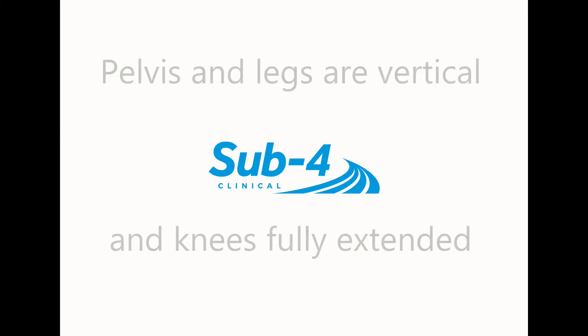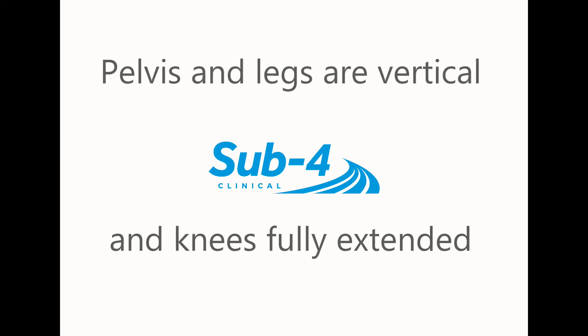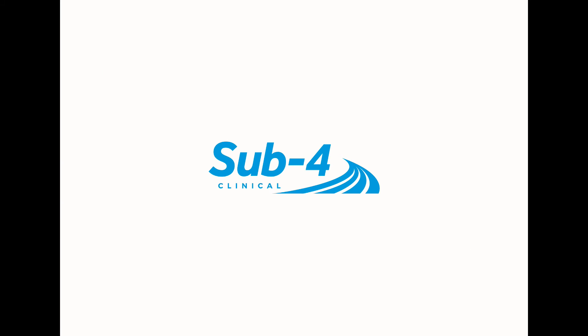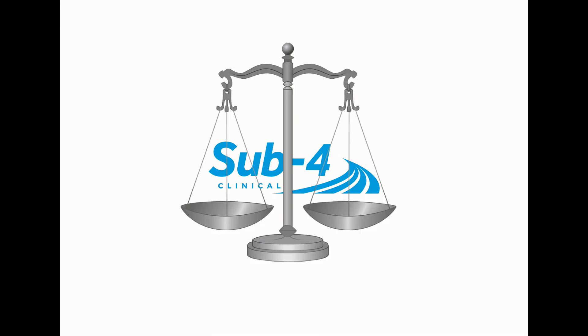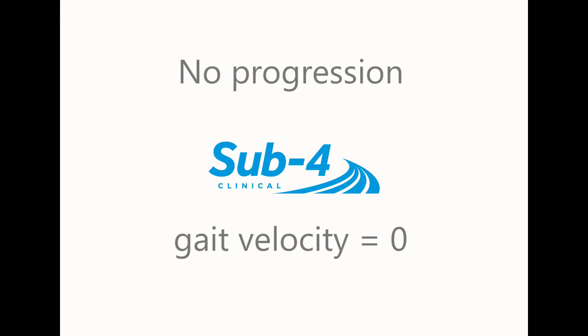Both the pelvis and legs are vertical and knees fully extended. The feet are flat on the ground at approximately 90 degrees to the legs at the ankle joint. Mean distance of the feet is 7.5 centimeters with a 7 degree out-toeing. The center of mass is distributed between each limb and ankle requiring minimal muscle action. As there is no progression, gait velocity is zero.